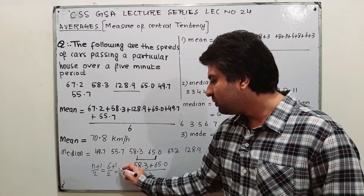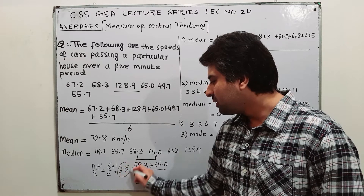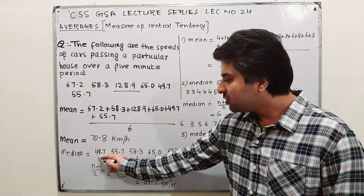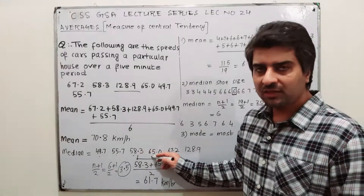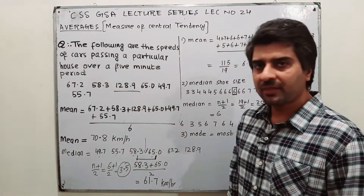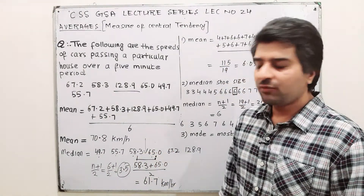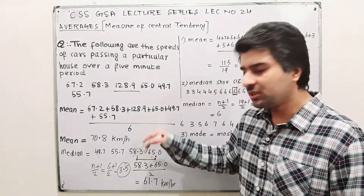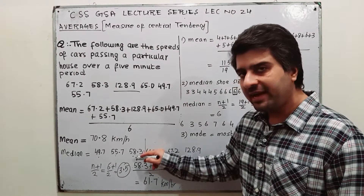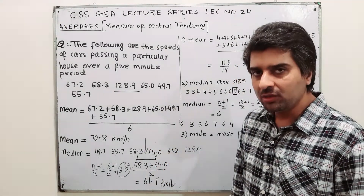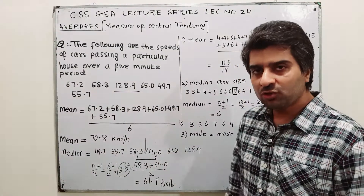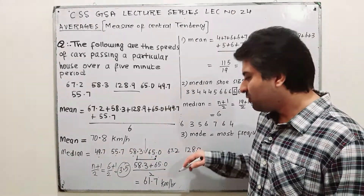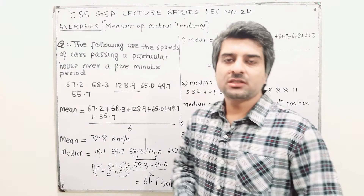Position 3.5 means between the 3rd and 4th positions. Count: position 1, 2, 3, 4. Position 3.5 is exactly between the 3rd and 4th values. To find the median, add the 3rd value and the 4th value and divide by 2. This gives your median for an even number of values.